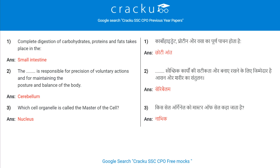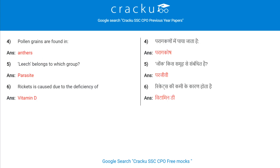Which cell organelle is called the master of the cell? Nucleus. Pollen grains are found in Anthers. Leech belongs to which group? Parasite.